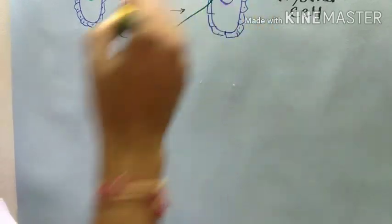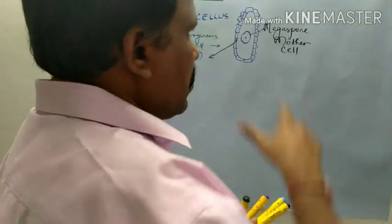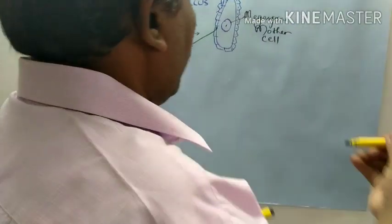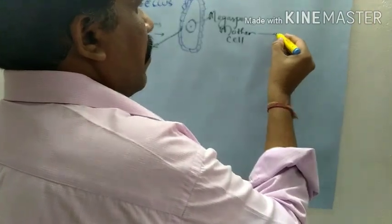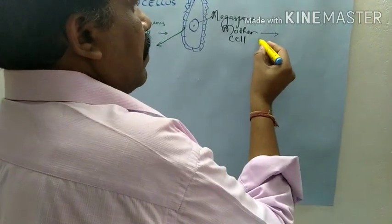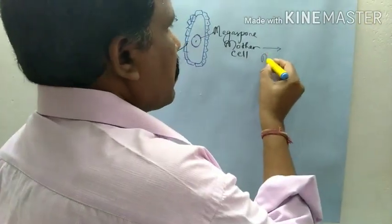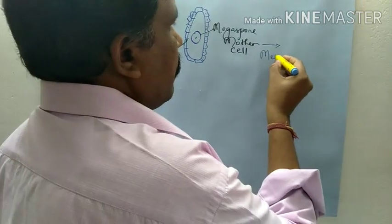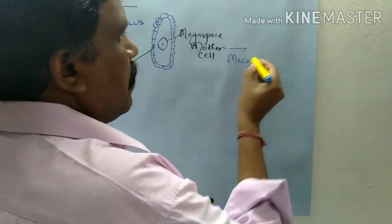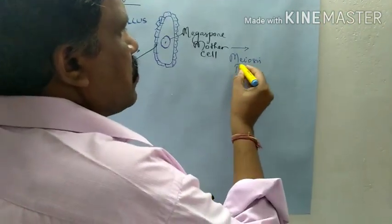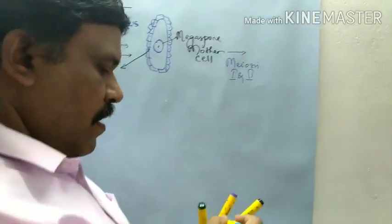So this is also 2N. This also will be 2N. Now this Megaspore mother cell will be proceeding for the reductional cell division — that is meiosis. Meiosis 1 and 2, we are proceeding.